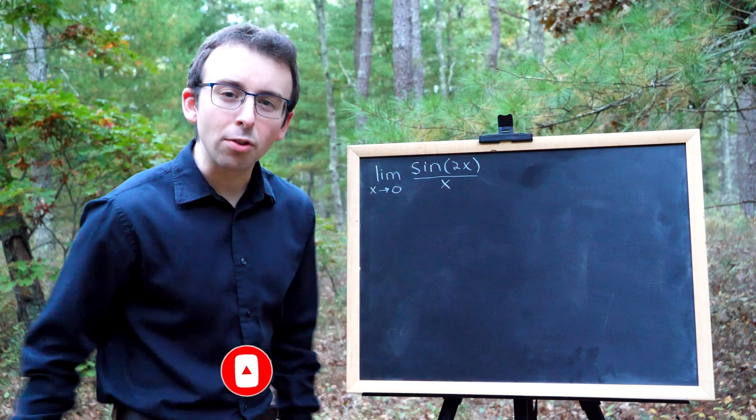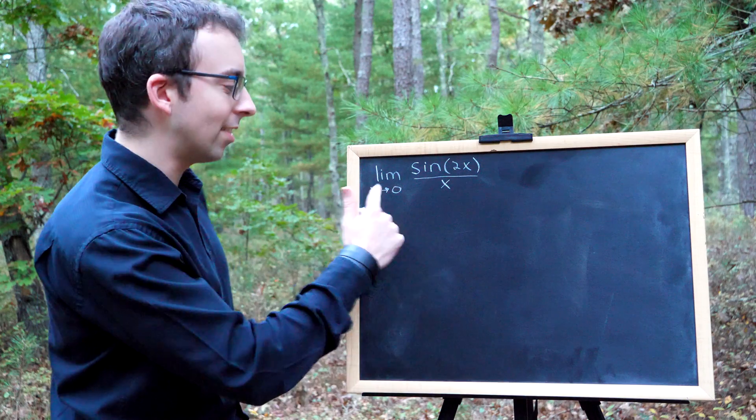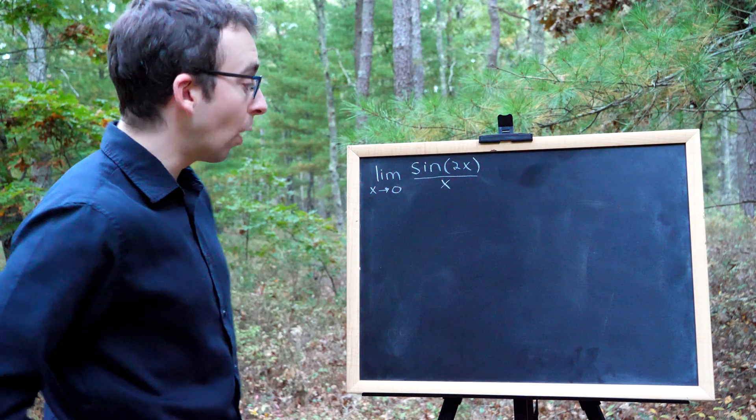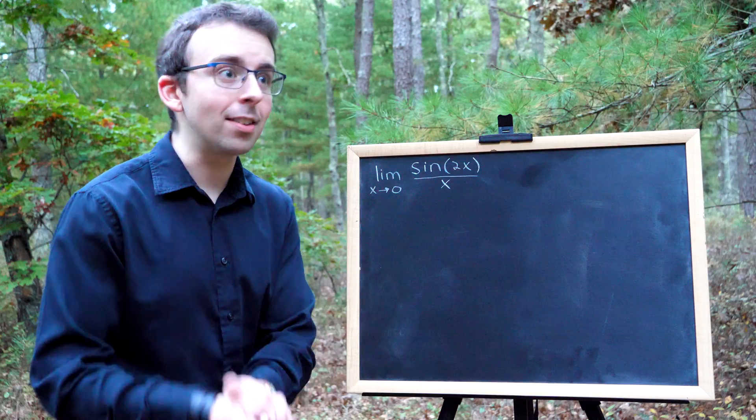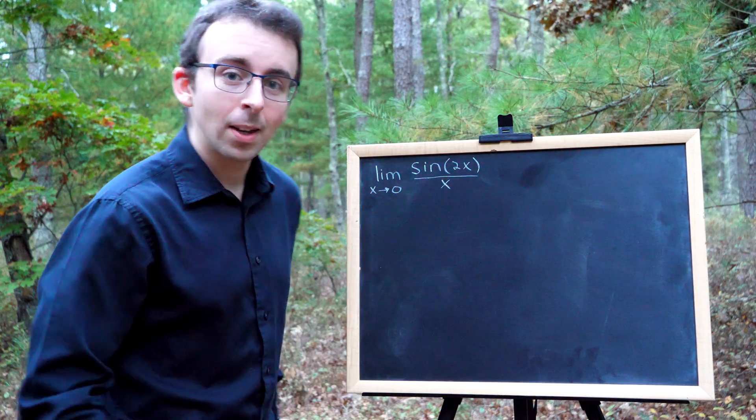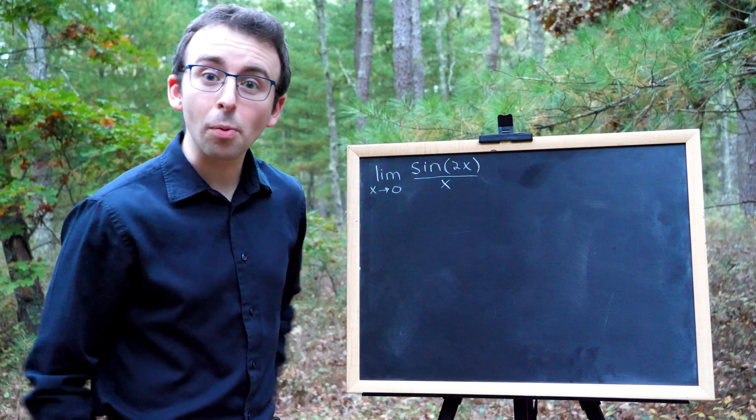The limit of sine of 2x over x as x approaches 0. What is that? Well, as always, your first instinct should be to try just substituting the value into the function. Can we plug 0 into this with no problems?